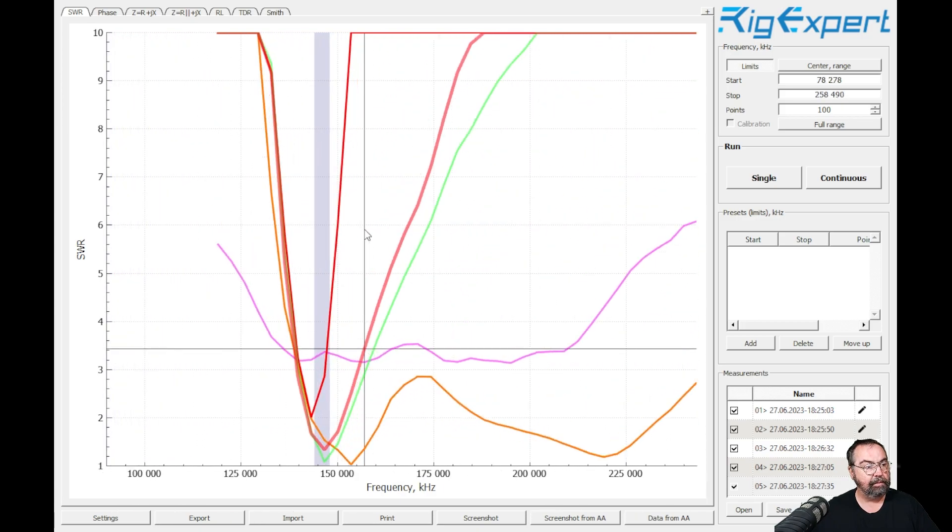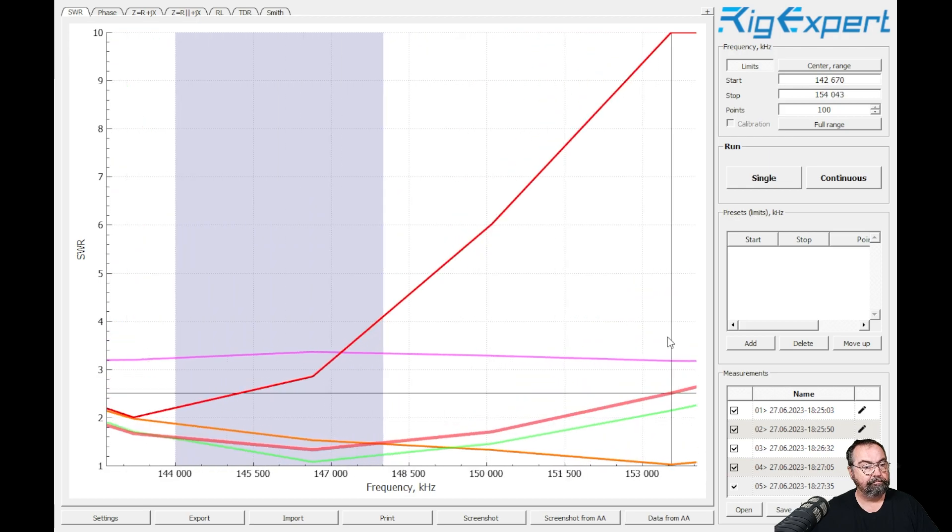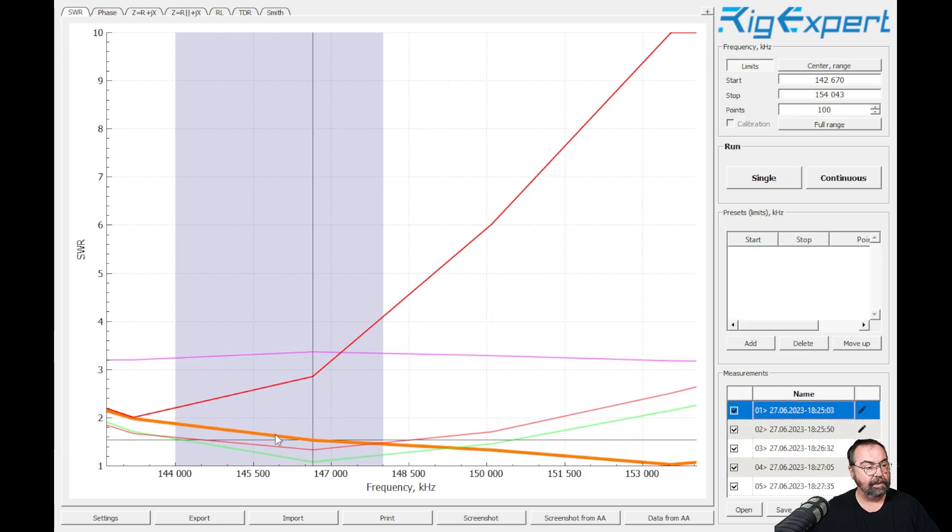And take a look and see what those. Let's zoom in here a little bit. We can see what we're doing. All right. So here's the Abris antenna. That's this orange line here.